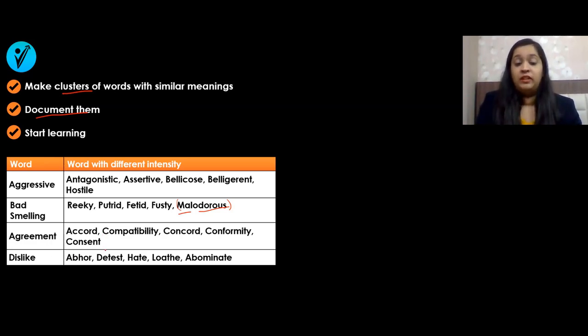Dislike: abhor, detest, hate, loathe, abominate. Again, words with 'ab' show it has something to do with dislike. The word 'dis' also—dislike, disdain. When you have 'dis' before it, it shows you do not approve of something. These small things, if you pick up, will help you understand and use words better in your vocabulary.